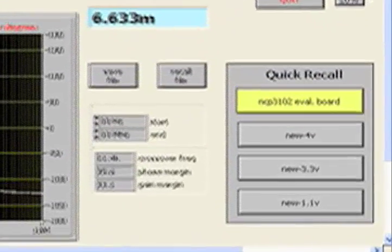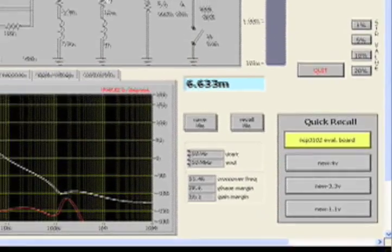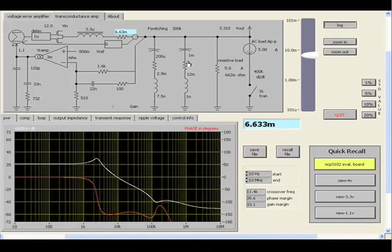Thanks, Chuck. Today we discussed the tool utilizing the NCP3102 10-amp integrated switching regulator. But the tool can also be used with other products from On Semiconductor. CompCalc also has a quick recall button in the lower right hand corner, which allows you to save multiple product configurations or different configurations of the same product.